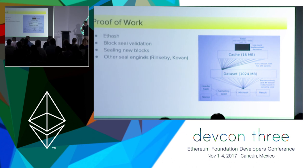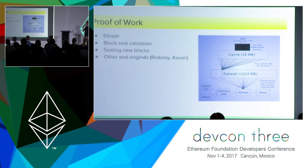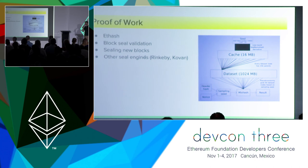This is the implementation of the proof-of-work algorithm still used in Ethereum, called ethash. The client needs it primarily for two reasons: validating blocks received over the network, and — if the client supports mining — creating new blocks. Some clients also support alternative sealing algorithms like proof-of-authority for private or test networks.